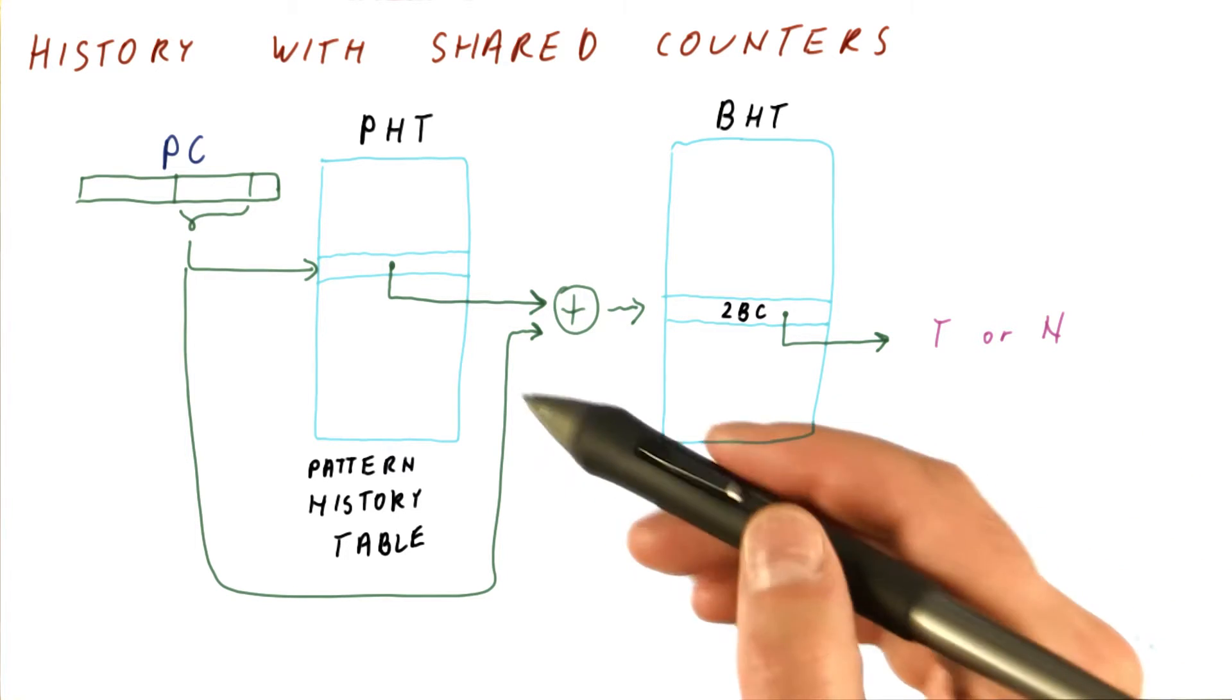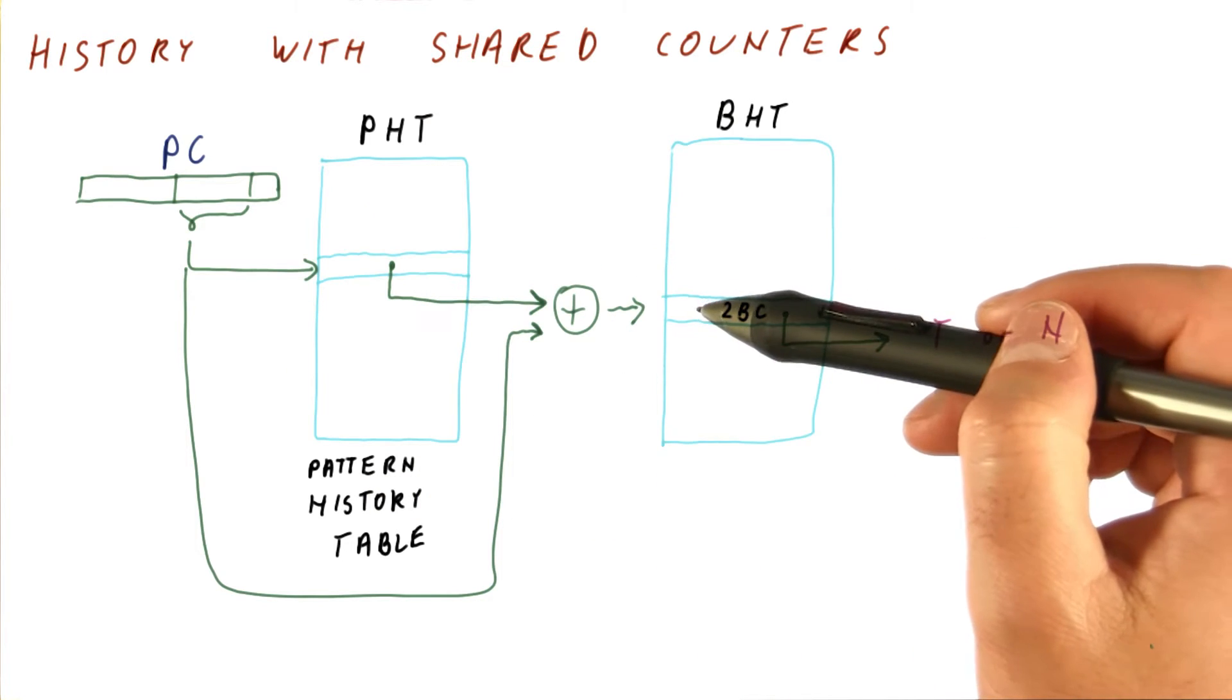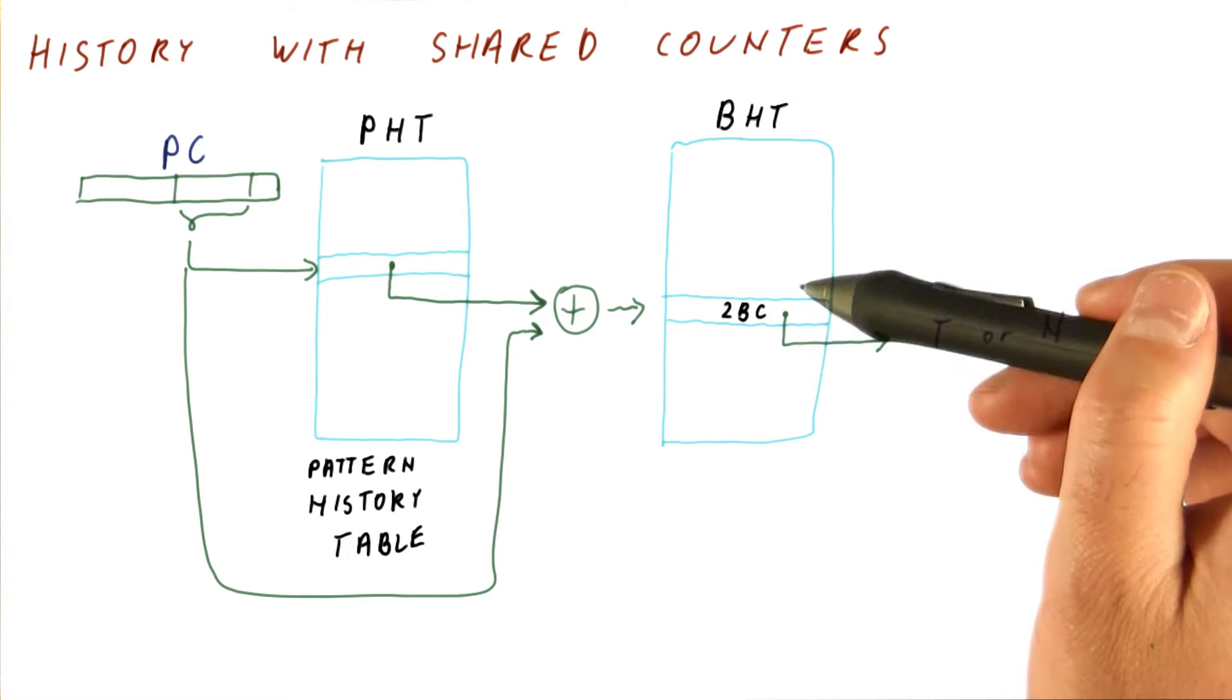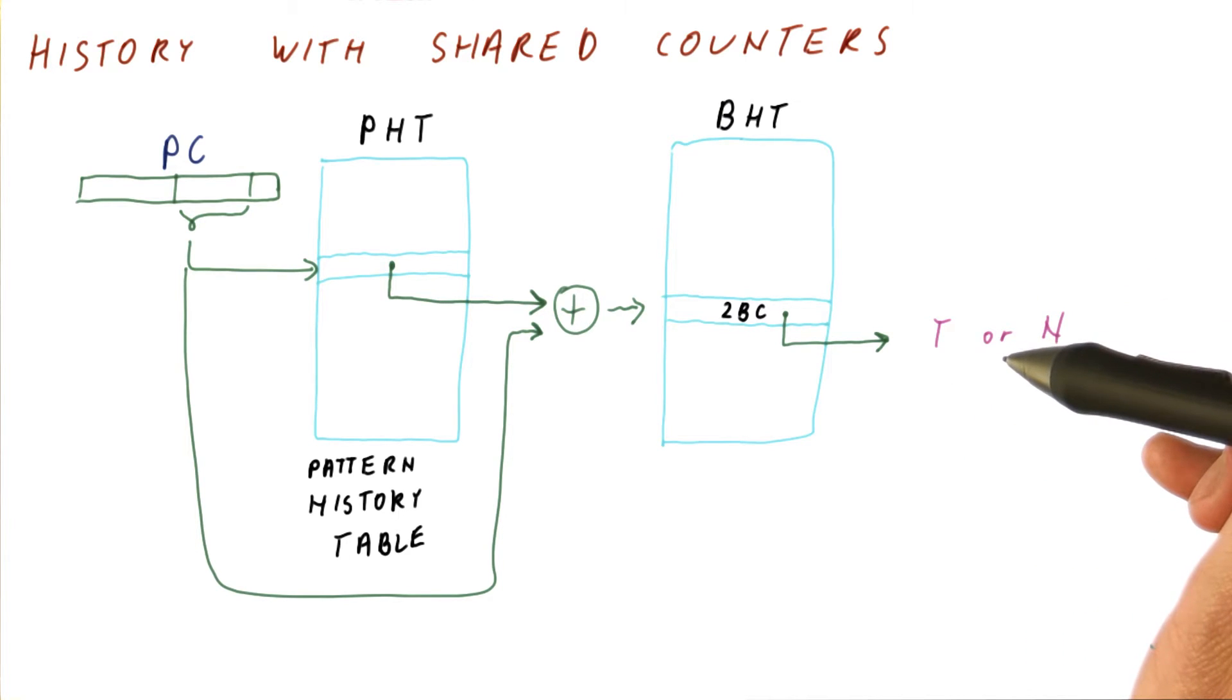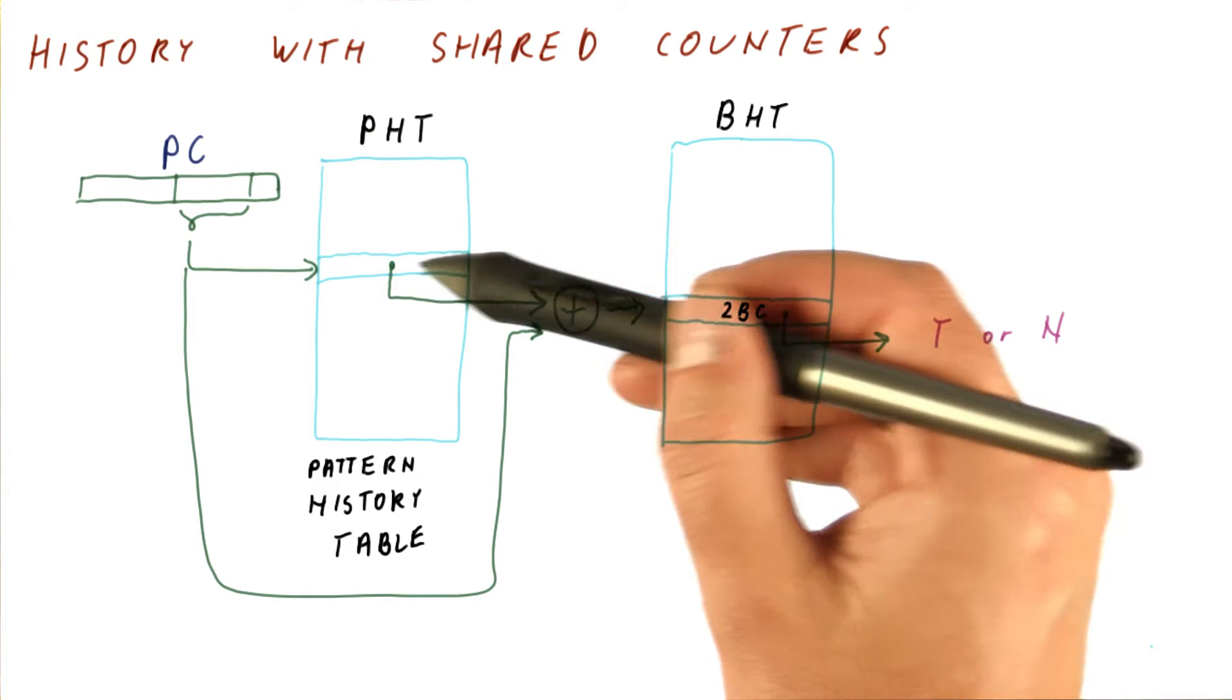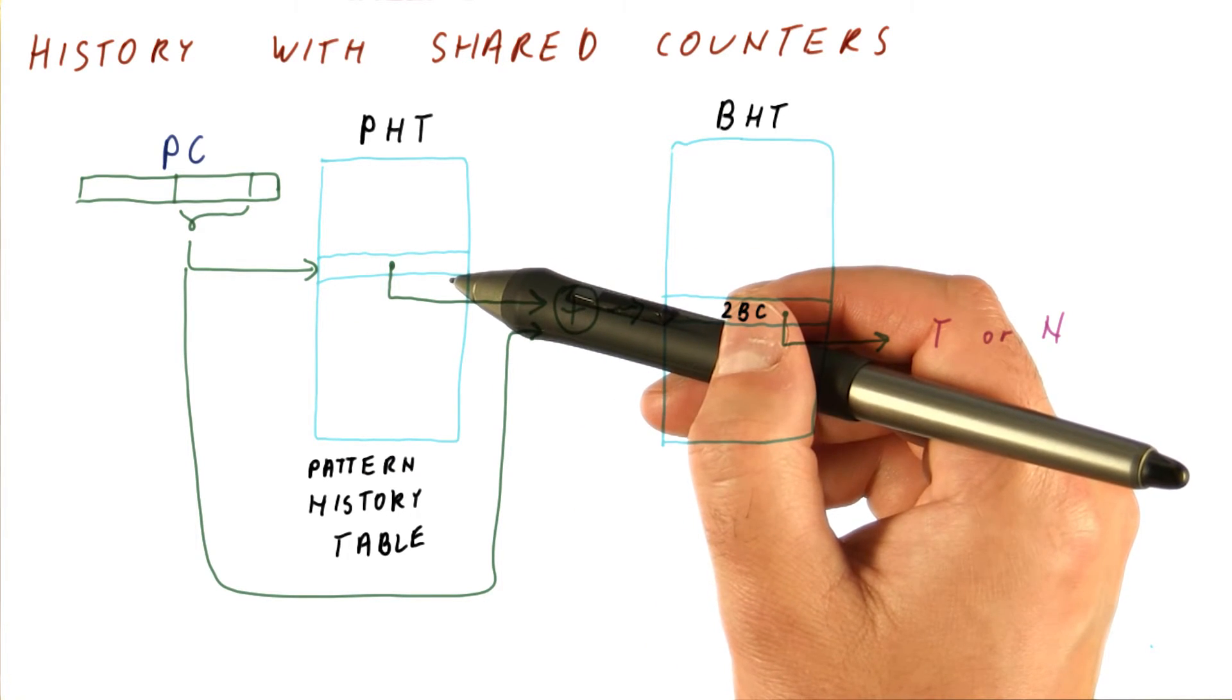Again, when the branch outcome is known, we use the same history and PC combination to index back into this two-bit counter, increment or decrement it based on the current decision on a branch. And then we shift in that pattern also into the PHT entry so that this history is ready for the next prediction on this particular branch.